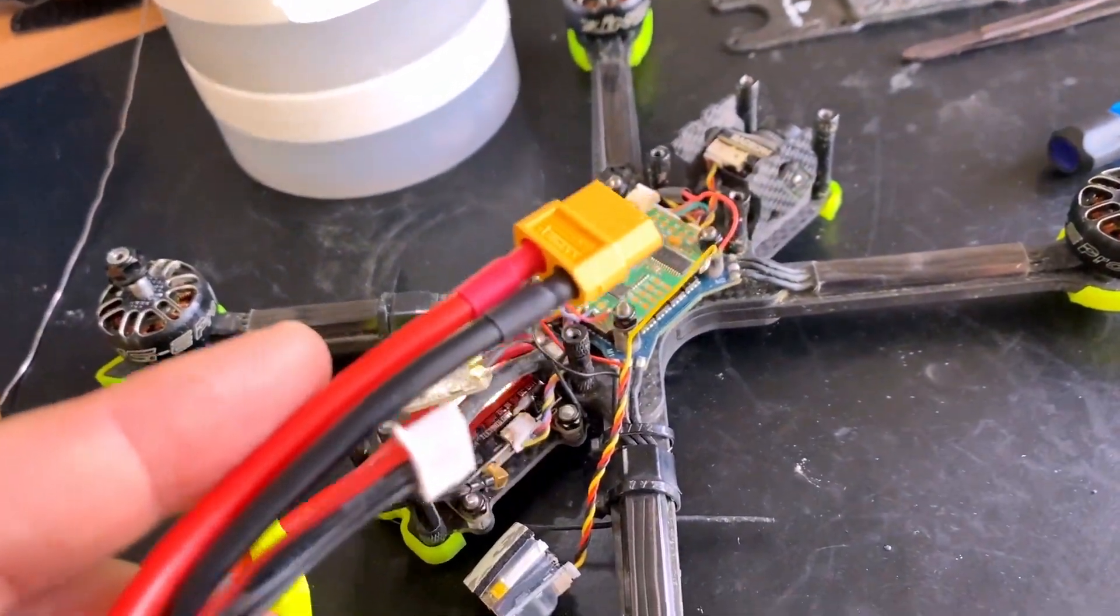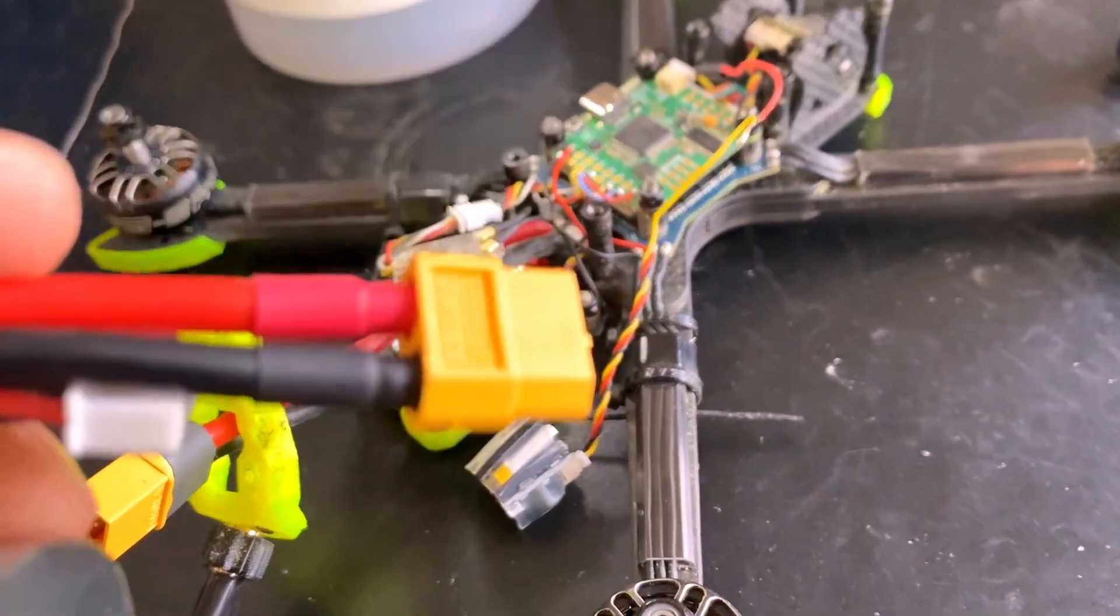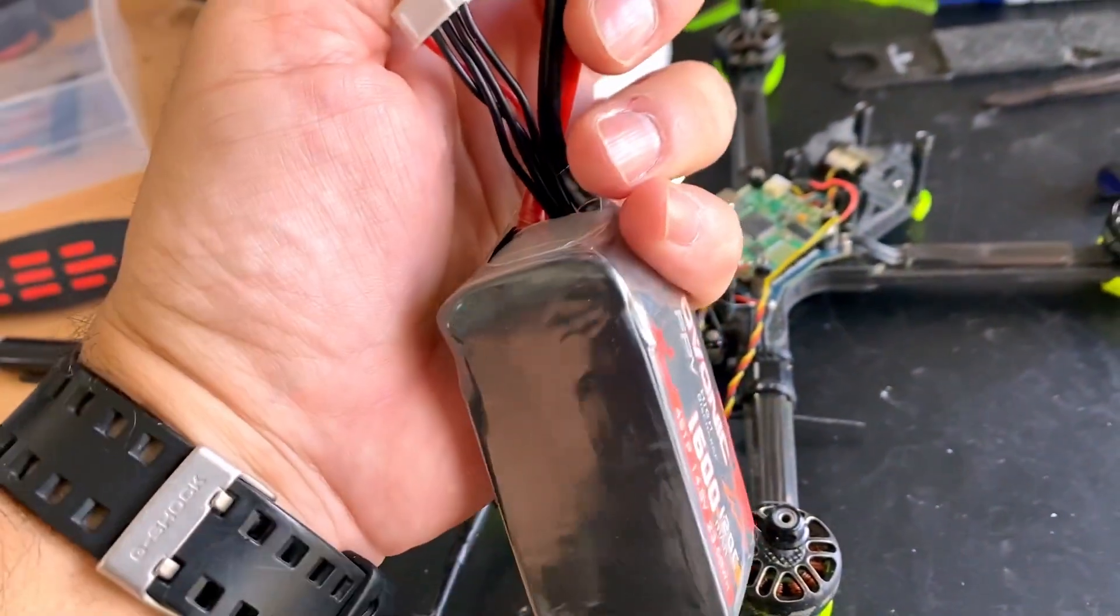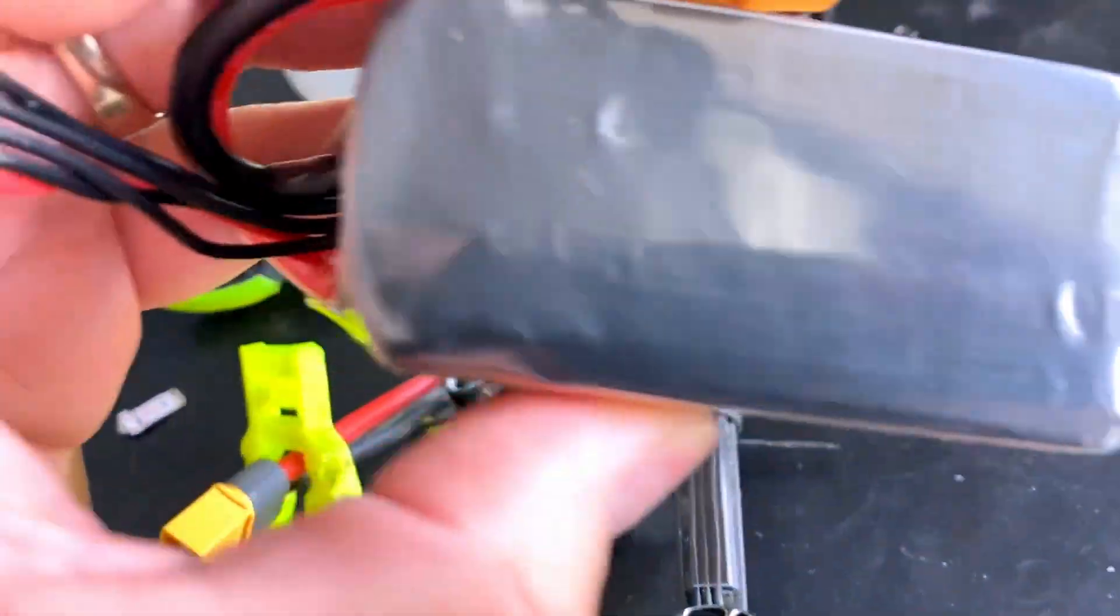I do have it really secure though. I put a strap over my XT60 connector onto the battery, so it's always strapped on the side like that. It's never going to eject.